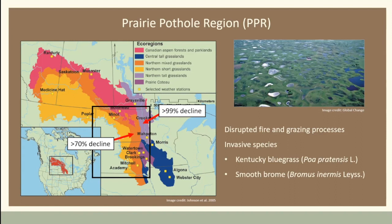Then we have these invasive species. A lot of the focus has been on Kentucky bluegrass and smooth brome. If we go further west we think of crested wheatgrass. There are some that haven't even been mentioned yet, like reed canary grass in wetland systems. I used to think reed canary grass was just an issue from the Minnesota border eastward, but I've watched it move west over my lifetime of doing this research.